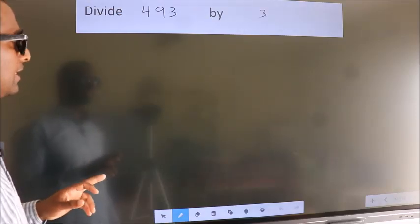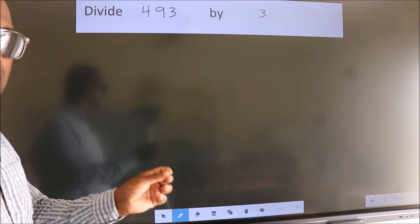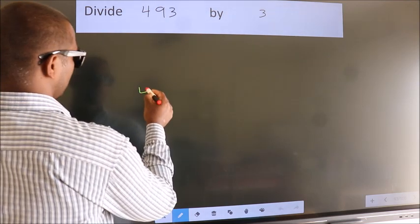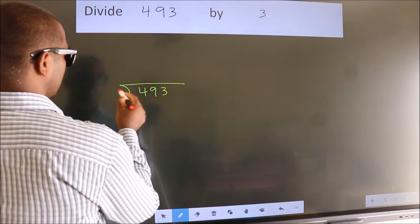Divide 493 by 3. To do this division, we should frame it in this way: 493 here, 3 here.